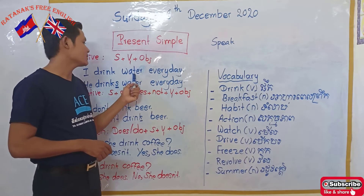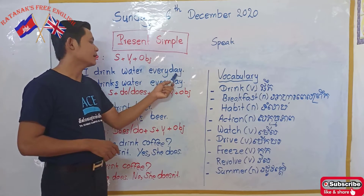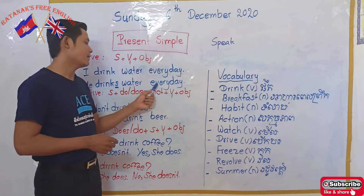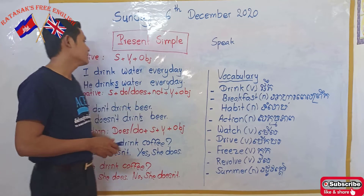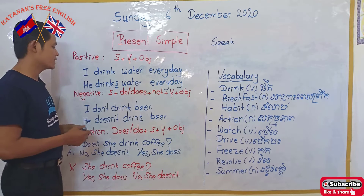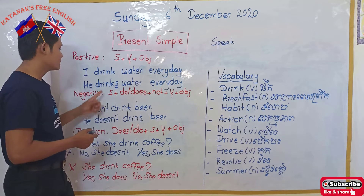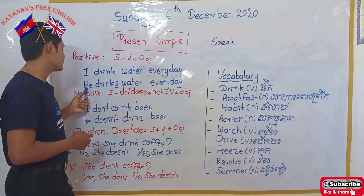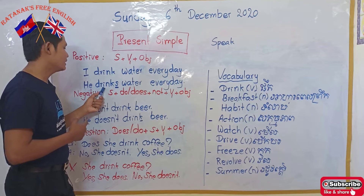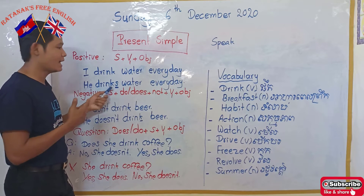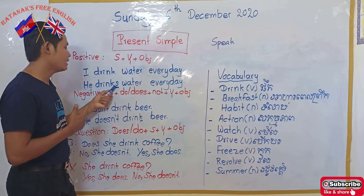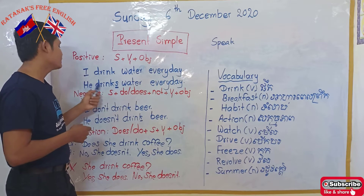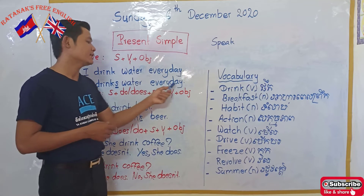'I drink water every day.' But 'he drinks water every day.' Whenever you use a third person singular subject, you must add 's' at the end of the verb. So: 'he drinks water every day.' Please don't forget to put 's' here.